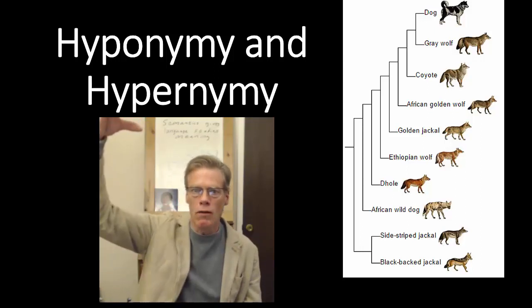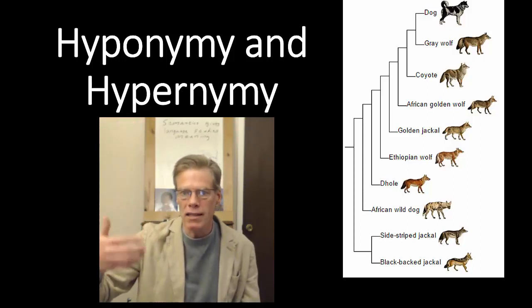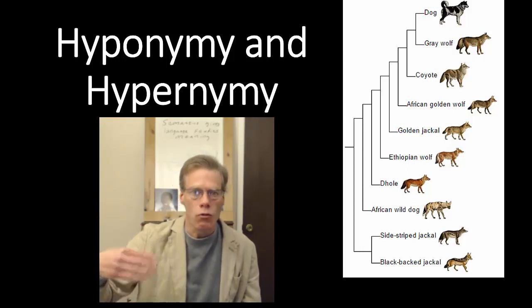And in that way, we know that gray wolves and dogs are very closely related because they share a common hypernym. So, a hypernym is above the word, hyponym would be below the word. So, for example, dog has many hyponyms like poodle, German shepherd, Rottweiler.